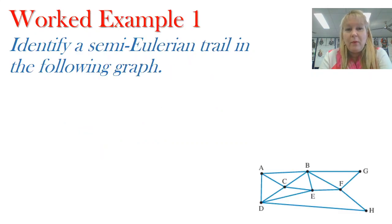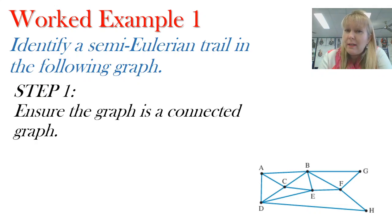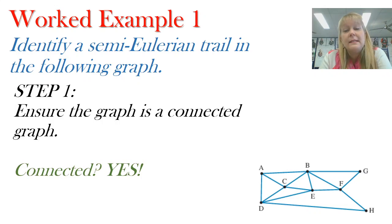So let's look at a worked example finding ourselves a semi-Eulerian trail through this graph. Okay step one. First of all we've got to make sure it's a connected graph. It doesn't work if it's not. And we're looking at this one. Yes it's connected. There's no point sitting out in the middle of nowhere.